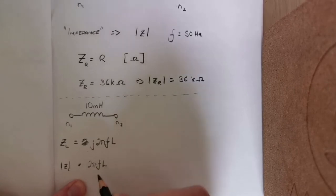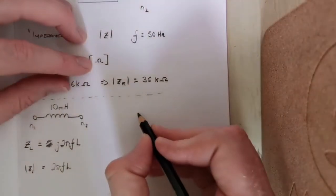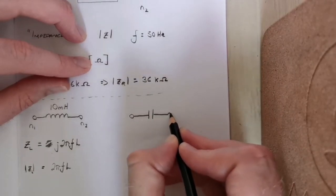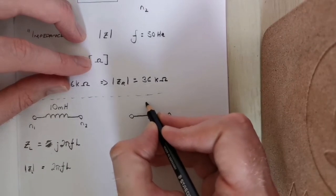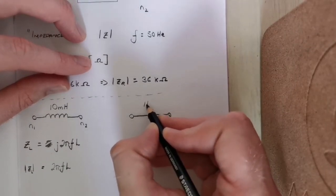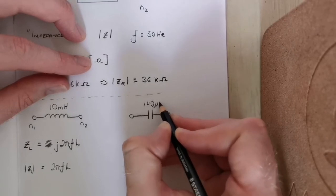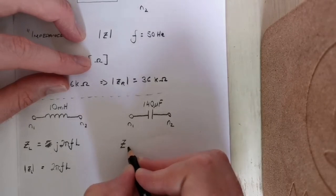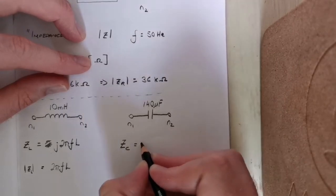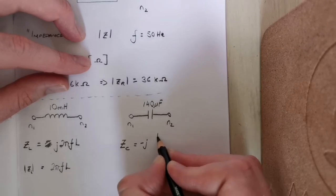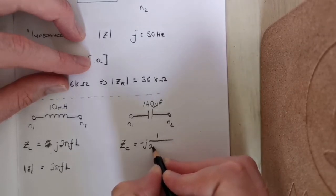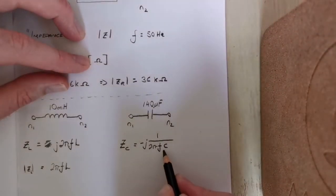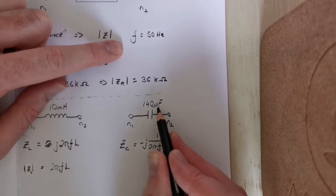If we compare that to the other component which would be a capacitor, let's assume this is a capacitor with 140 microfarads of capacitance. The impedance of a capacitor ZC is minus j times 1 over 2 pi f C. Again, it depends on its frequency and the capacitance value.